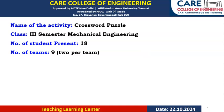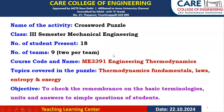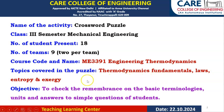The activity is a crossword puzzle. The class is third semester Mechanical Engineering, with 18 students present during the activity. They were grouped into nine teams, two per team. The course code and name is ME 3391 Engineering Thermodynamics. The topic covered in the puzzle is the first three units: Thermodynamics Fundamentals, Laws of Thermodynamics, and Entropy and Exergy.